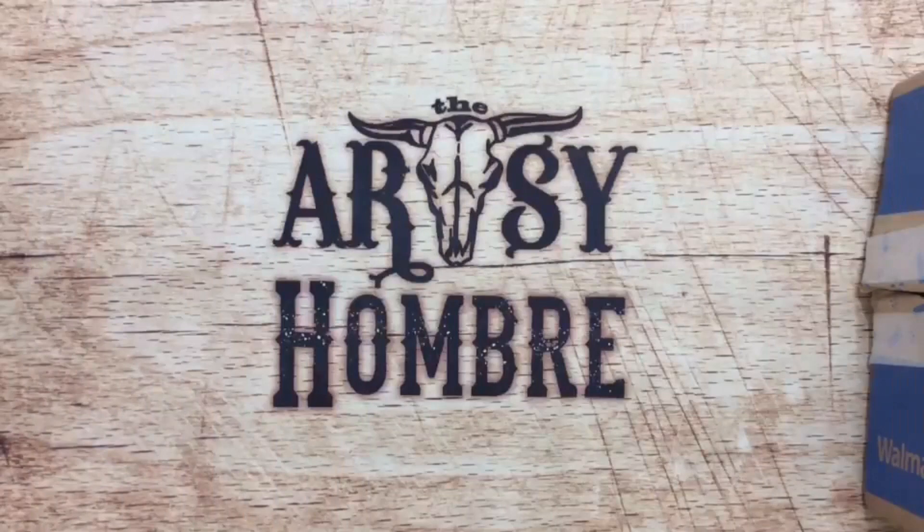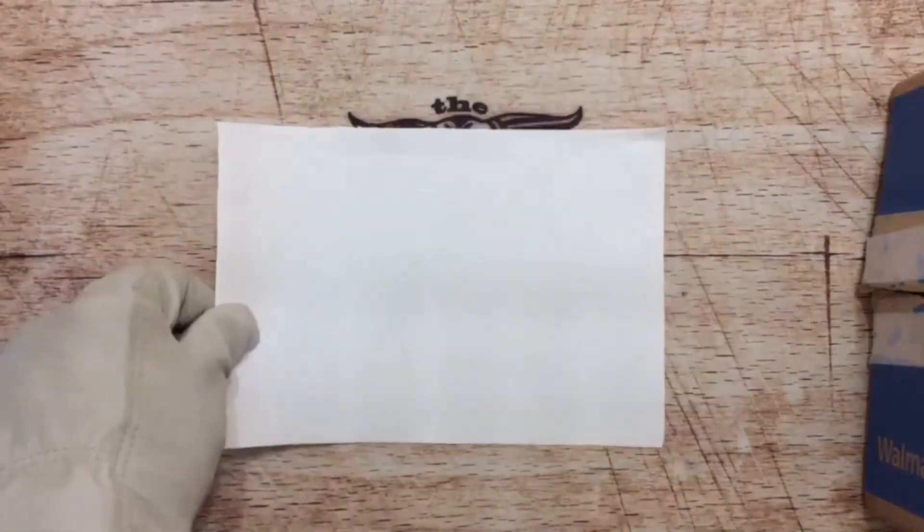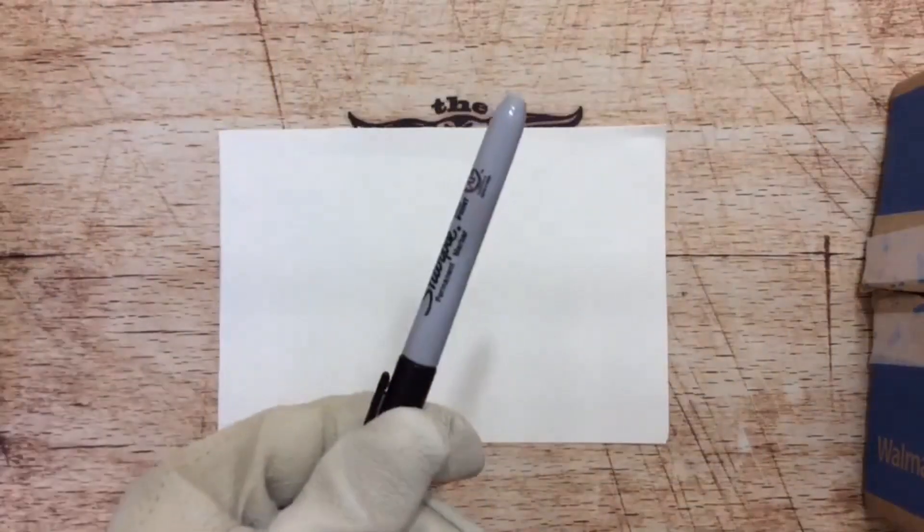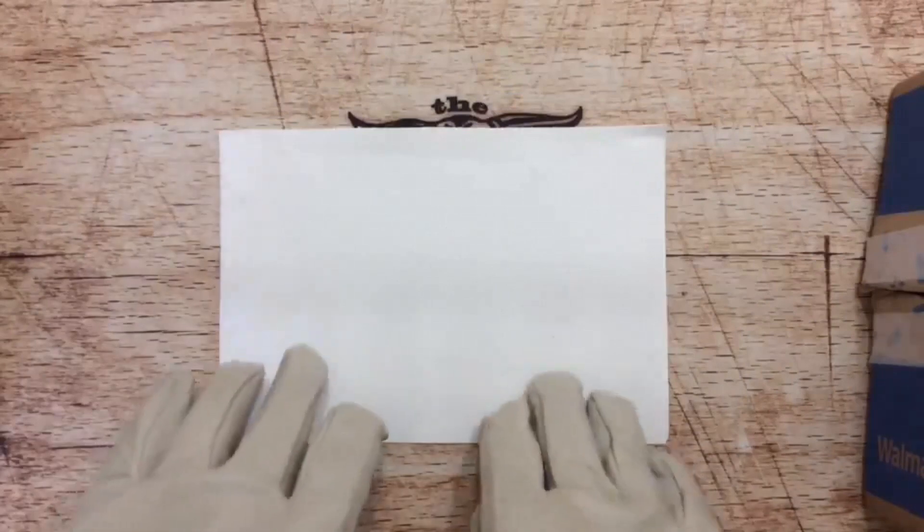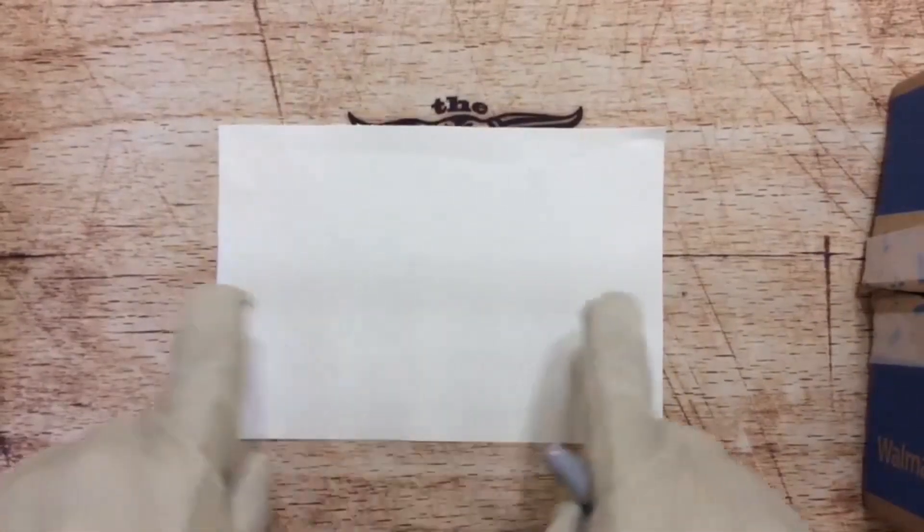All right now, for this project, you're going to need two things. You're going to have to get you a piece of paper and something to draw with. Now when you put your paper down, you want to make sure that it's like this, horizontal.